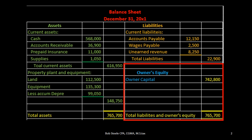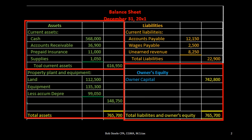In this lecture we're going to be creating the equity section of the balance sheet. In prior lectures we have taken a look at the current assets section, the property plant and equipment section, and the liability section. This will be rounding out the balance sheet where we will finally get to total assets being equal to total liabilities and equity, representing the double entry accounting system in terms of the balance sheet and the accounting equation.